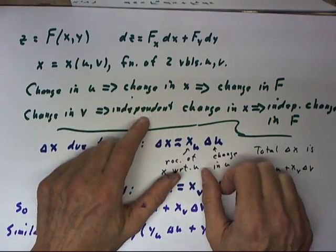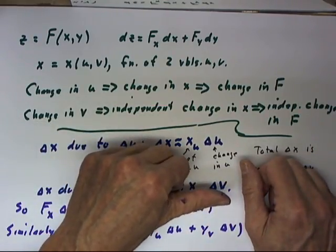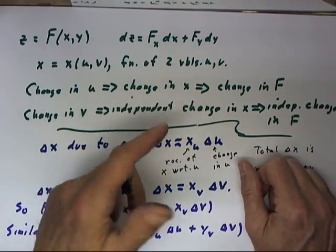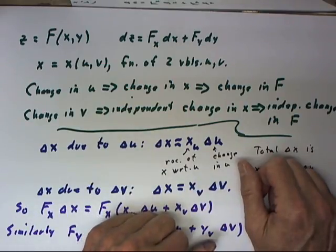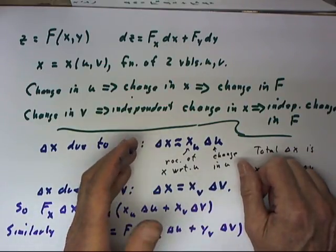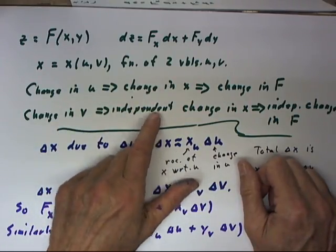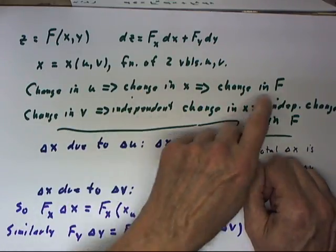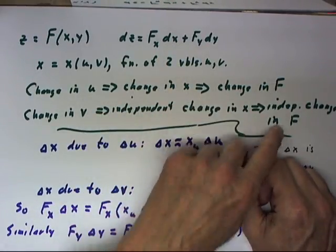These changes are independent in the same sense that when we looked at a function f of xy, the change in y depended only on the y derivative and was independent of the change in x, which depended only on the x derivative. So they were independent and this change in u and change in v have independent effects, ultimately on, first on x and ultimately on f.